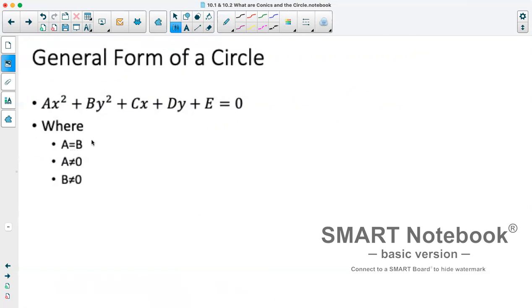So we have a equals b. If these are different numbers, it's no longer going to be a circle because it will mean that they have stretched or compressed by a different amount. We also need those squared terms. So a cannot equal 0 and b cannot equal 0.